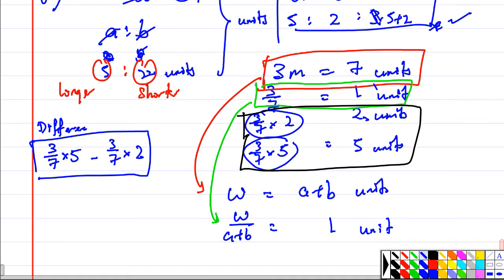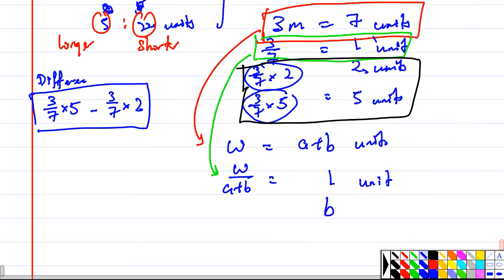B units. So B units equals to how many? W over (A plus B) times B. A units... times A.